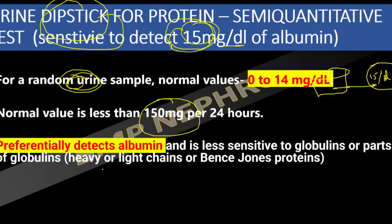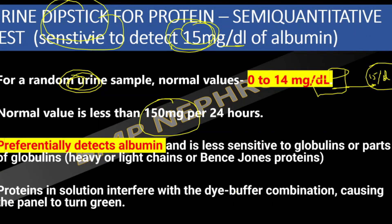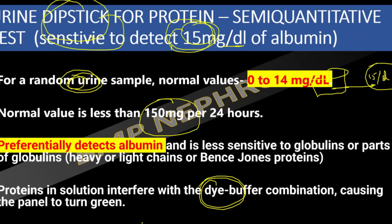The urine dipstick assay is based on the mechanism where protein — preferentially albumin — reacts with the dye bromo cresyl blue, causing a change in the color of the reagent. Based on this color change, we detect how much albumin is present. The protein reacts with the dye-buffer combination, and the resulting color is compared with the standard color provided on the bottle.